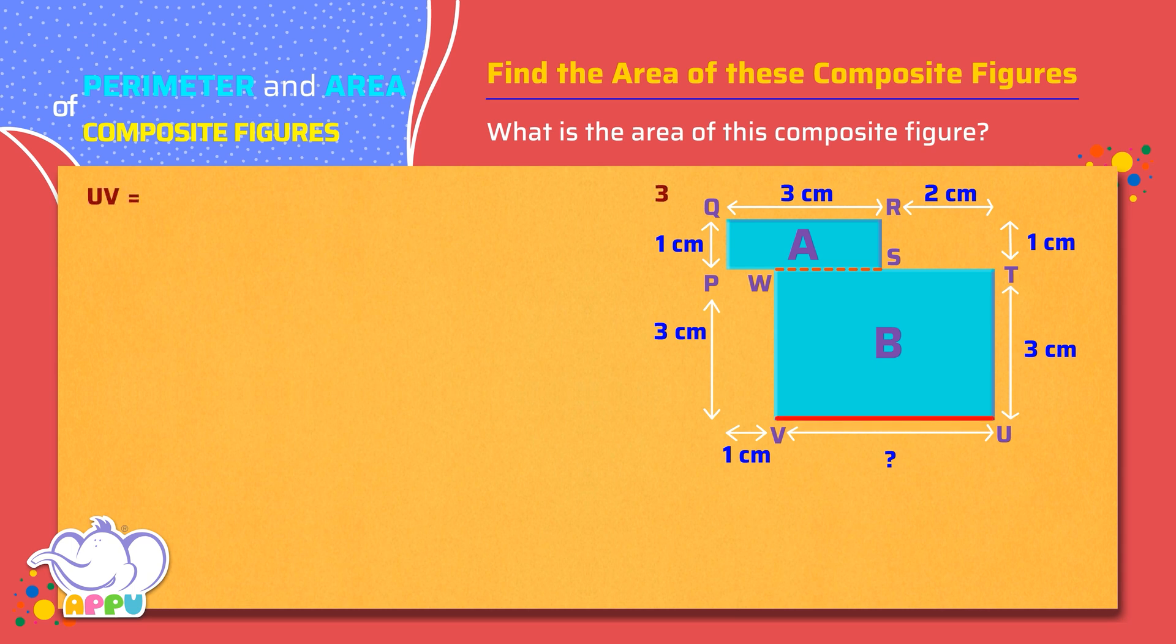UV equals 3 plus 2 minus 1 equals 4 centimeters.